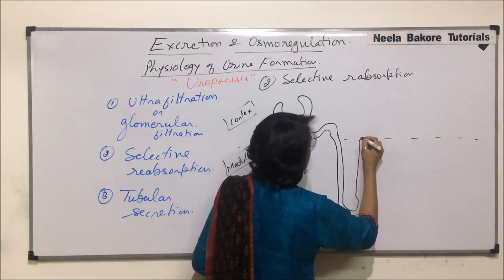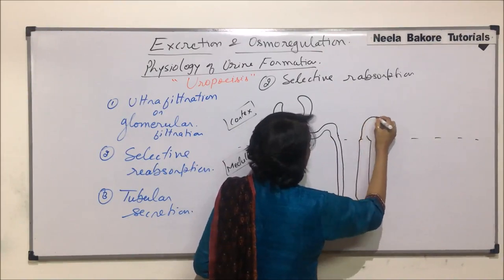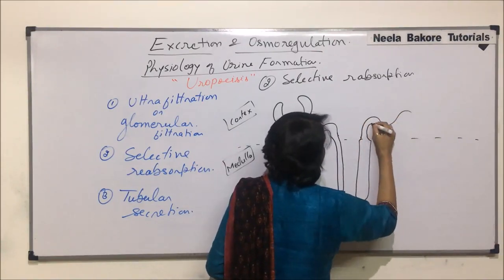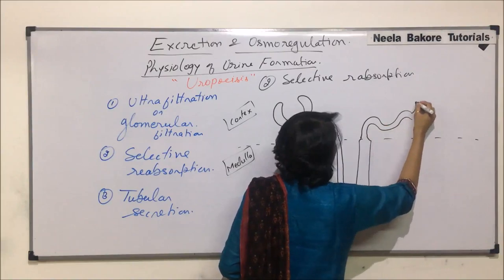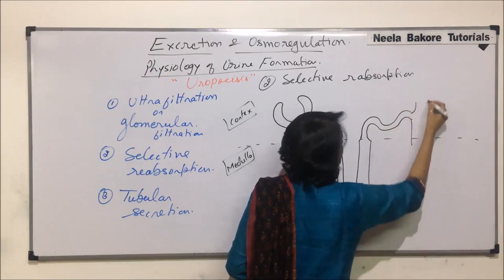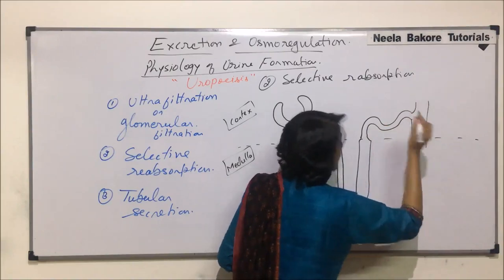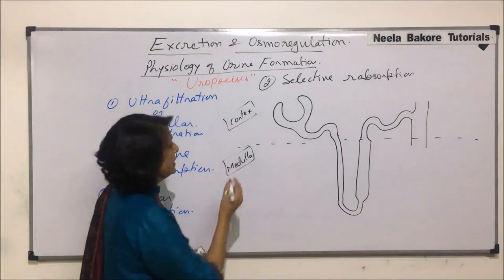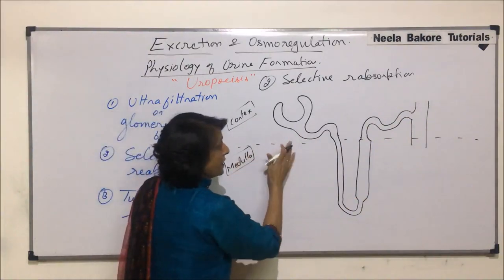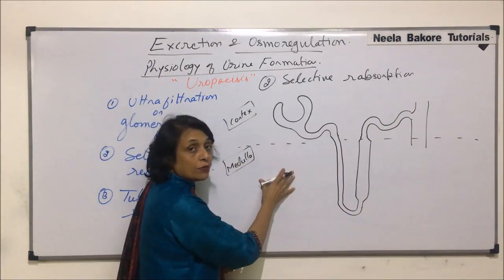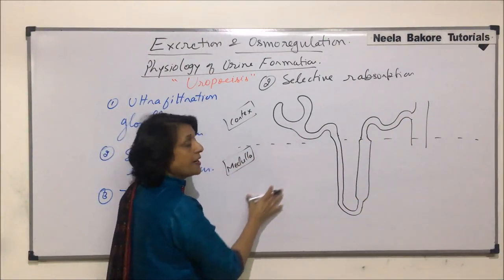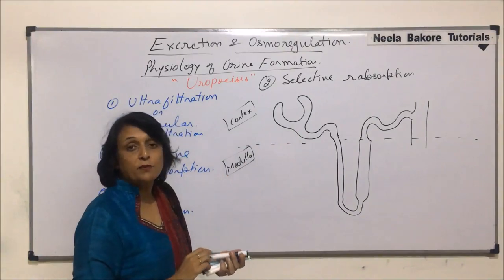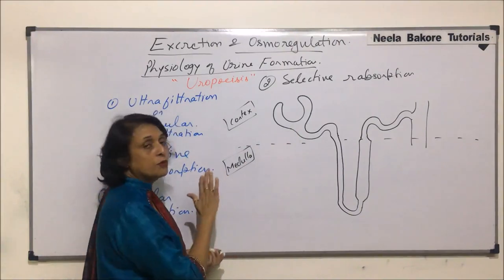Then it changes into the next coiled part — that is DCT — which opens into the collecting duct. We have seen this structure in detail, but why are we drawing it again? Because now we want to show where which substance gets absorbed.